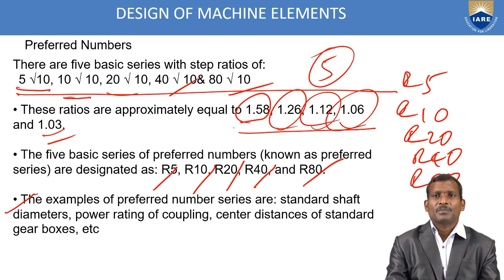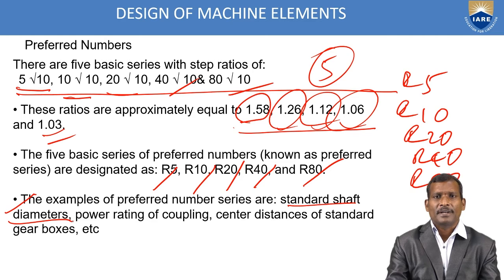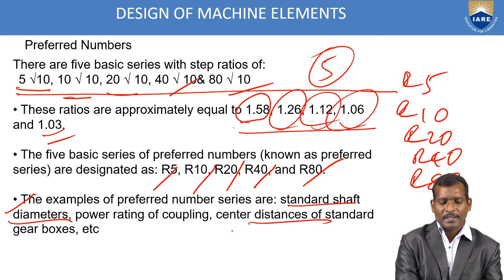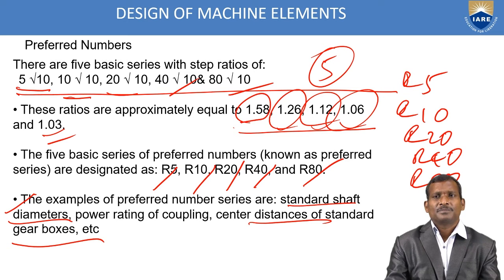Examples of preferred number series are: standard shaft diameters (as discussed), power rating of couplings such as 10 kW, 20 kW, 12.5 kW, 25 kW, and center distance of standard gear boxes in millimeters. These are the examples of preferred numbers.